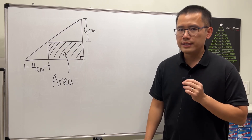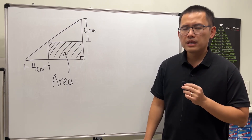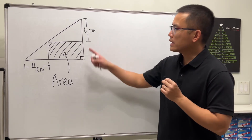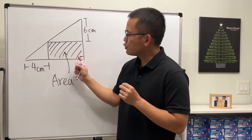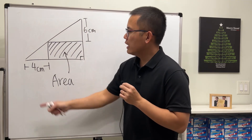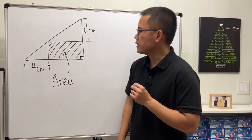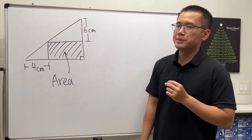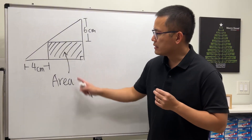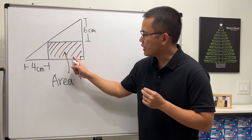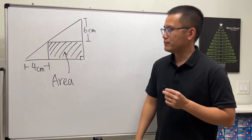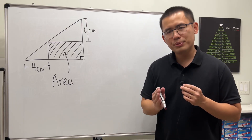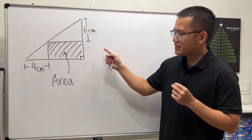Today let's take a look at a geometry question. We are given a right triangle, and we know this part is 4 centimeters and this part is 6 centimeters. Our goal is to find the area of the shaded rectangle. Please pause the video and try this first.